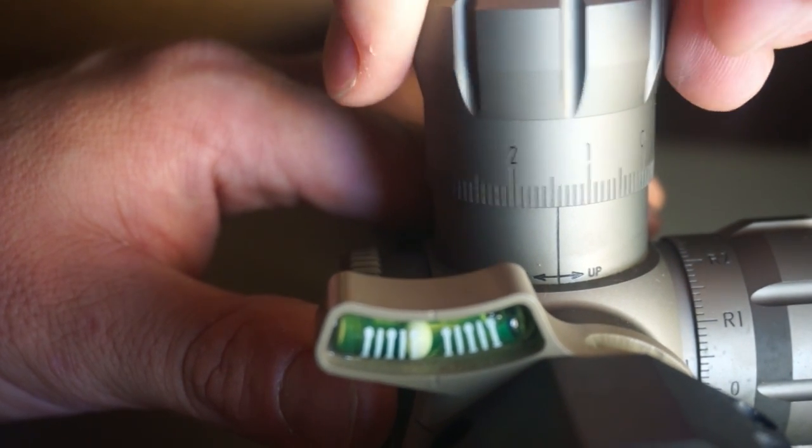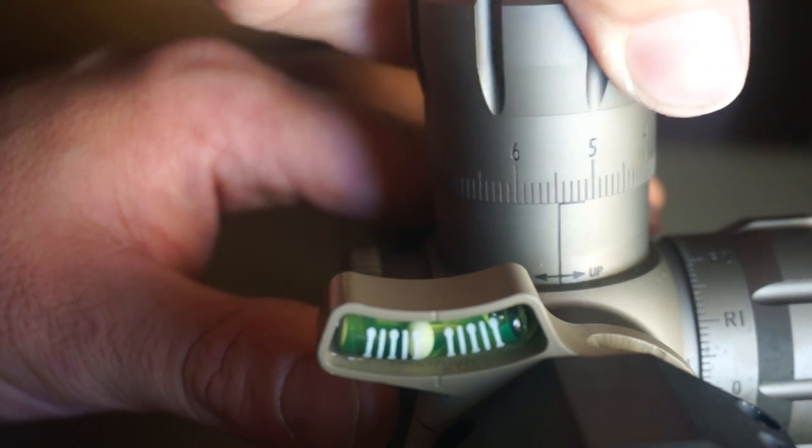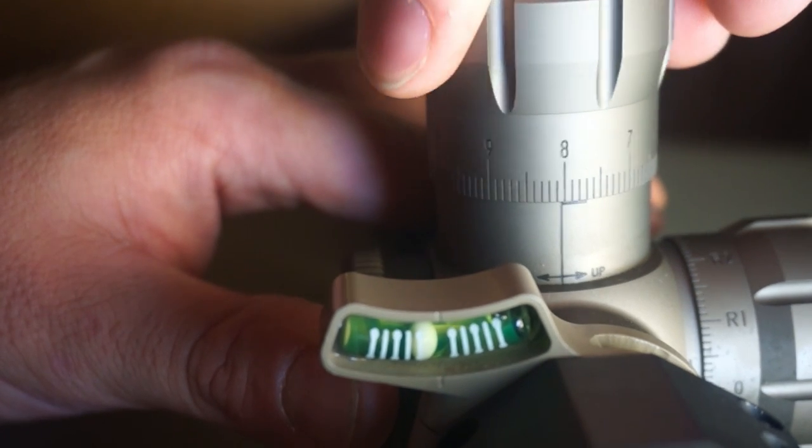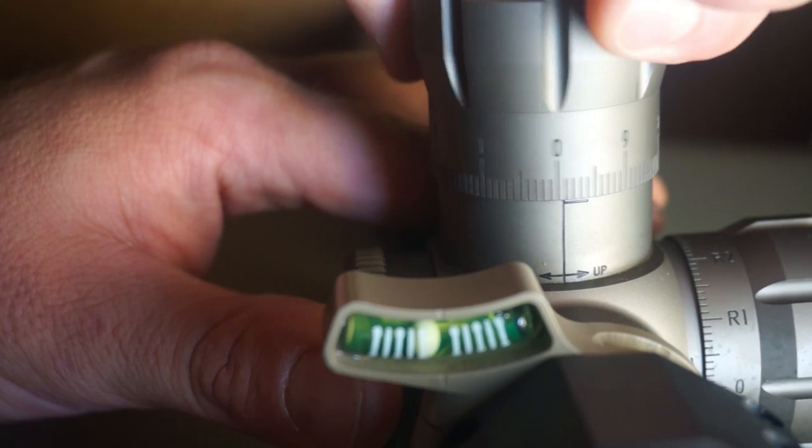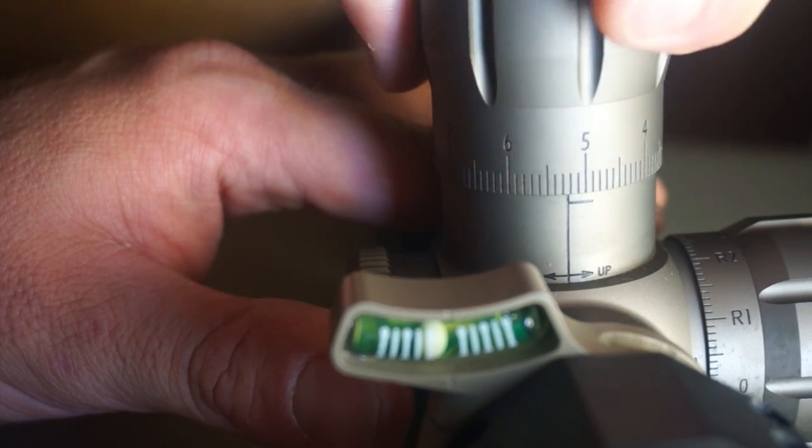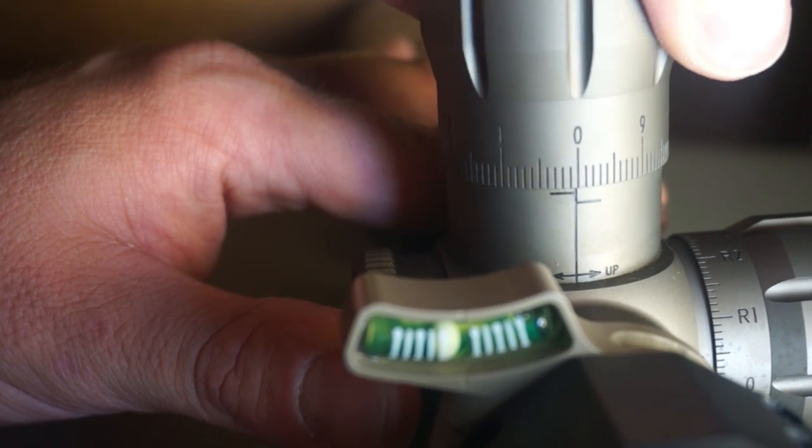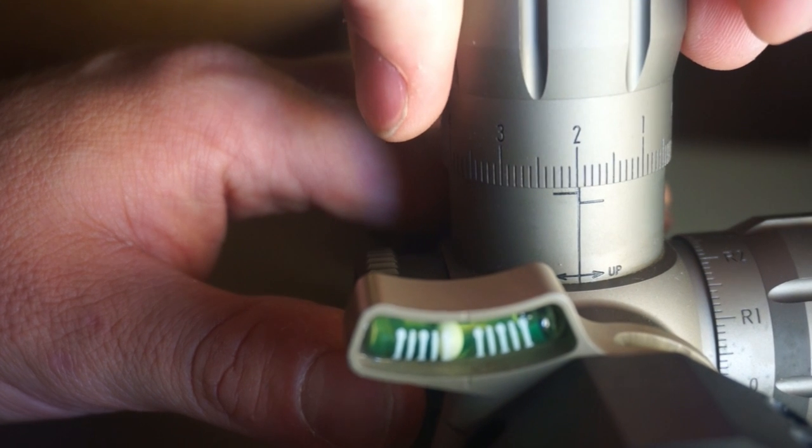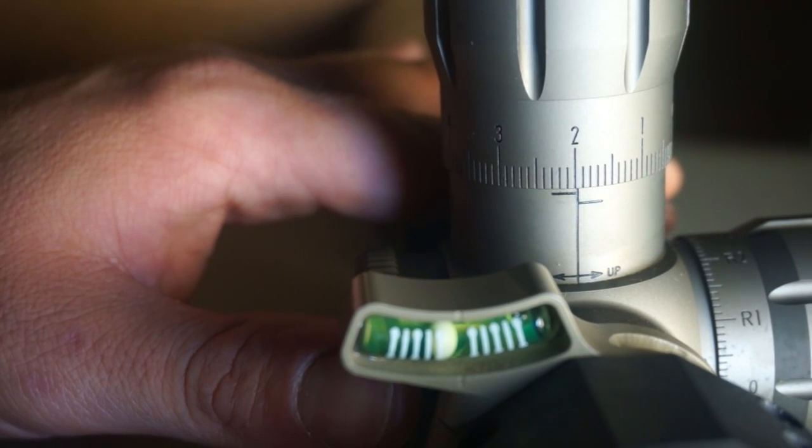I see more shooters waste ammo trying to get that initial 50 yards zero because of the confusion with the turret system they have. This is due to the quarter inch at 100 yards line of thought, which of course would double at 50 yards. While it seems like something that's easy to remember, it's one of the biggest mistakes I see people make while sighting in a rifle.